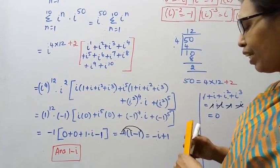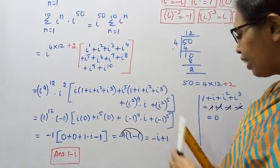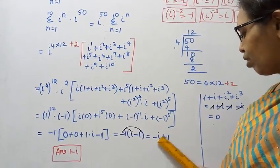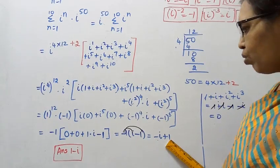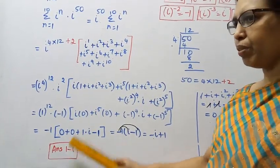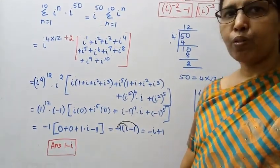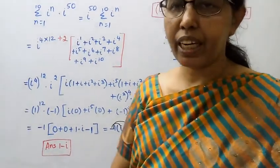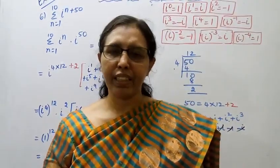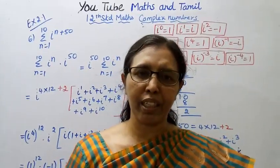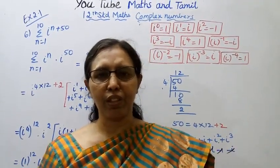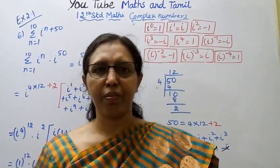The real part is minus 1 and the imaginary part is i, so the final answer is 1 minus i. Practice in this channel helps you to get hundred marks. Subscribe to the channel because new videos are available. Thank you.